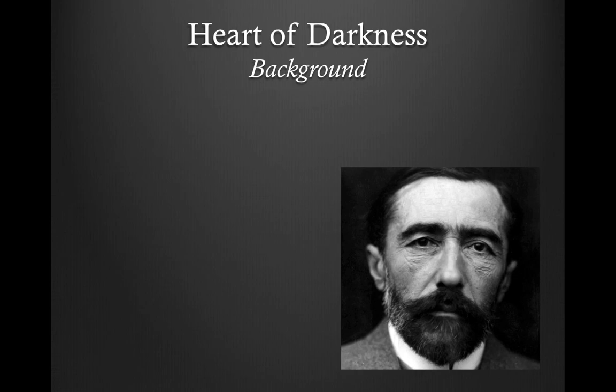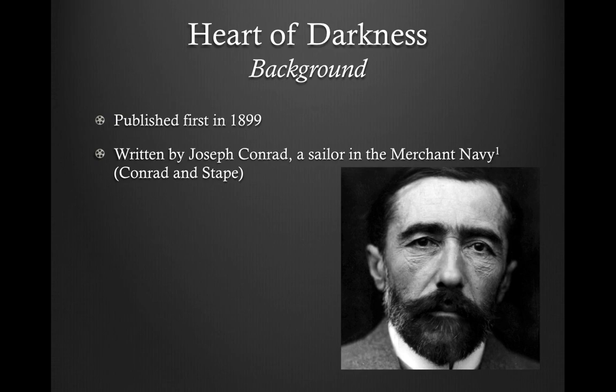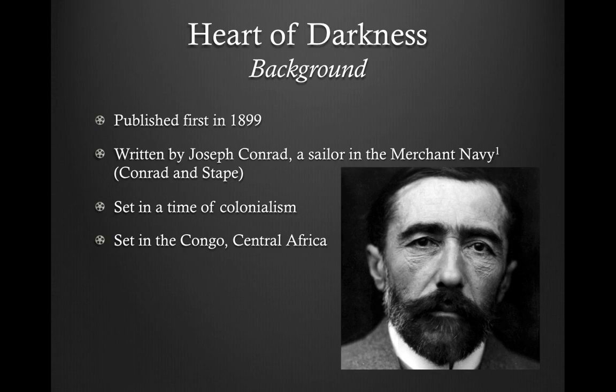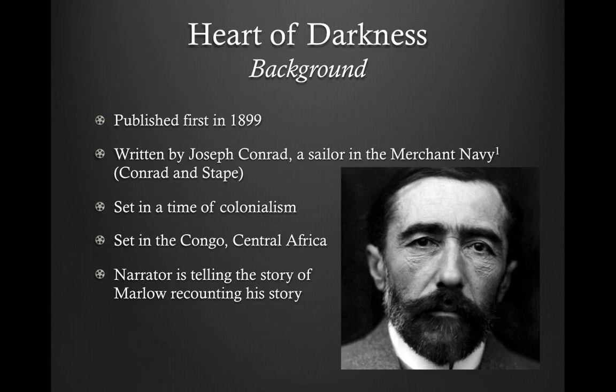To give a bit of background on our text, Heart of Darkness was first published in 1899, right at the turn of the century. It's written by Joseph Conrad, who was a sailor in the Merchant Navy — which is especially important because it was set in a time of colonialism, and Conrad would have had a lot of interaction with the colonialism of the time, which comes through in what he wrote. It's set in the Congo, Central Africa — on the receiving end of colonialism. The story is told from the perspective of a narrator listening to Marlow recount his story, making it a second-hand account.